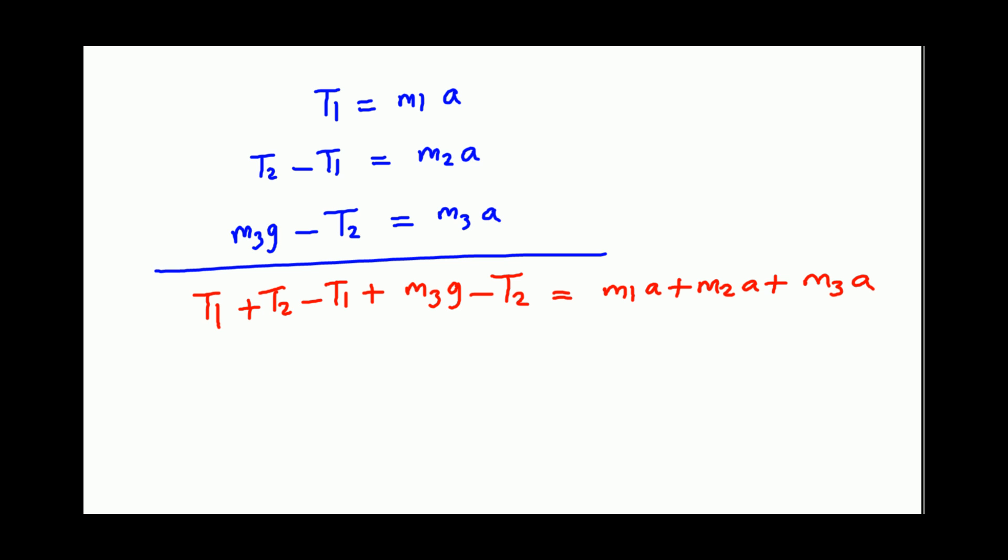T1, negative T1 cancels out. T2, negative T2 cancels out. So what do we get? M3g equals, A is common. So you say A times M1 plus M2 plus M3.